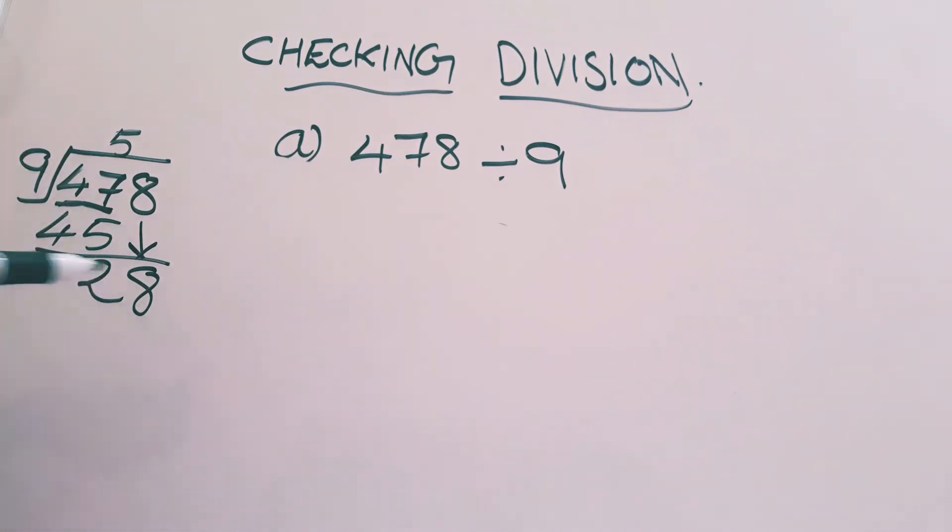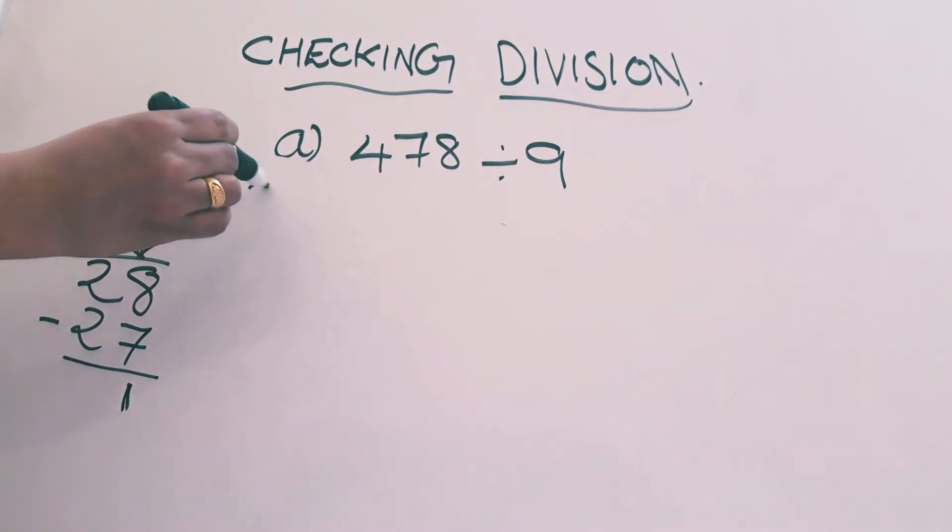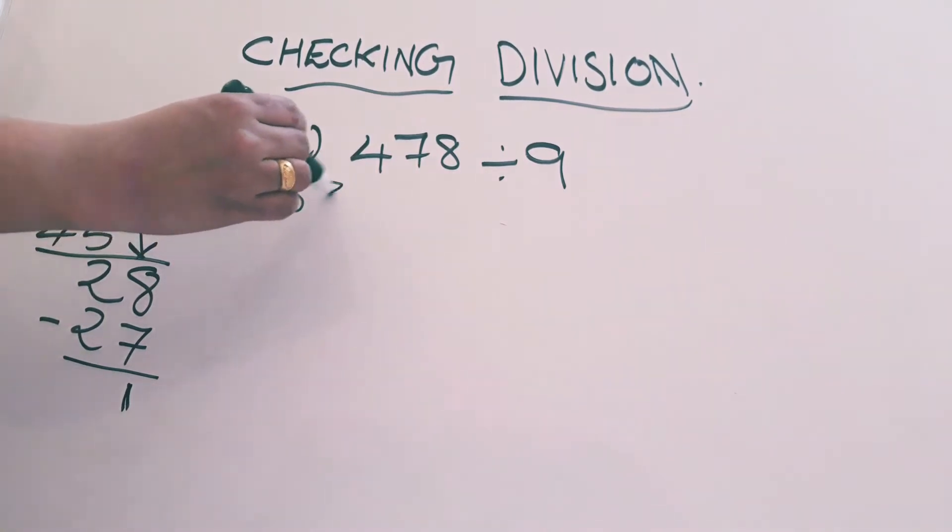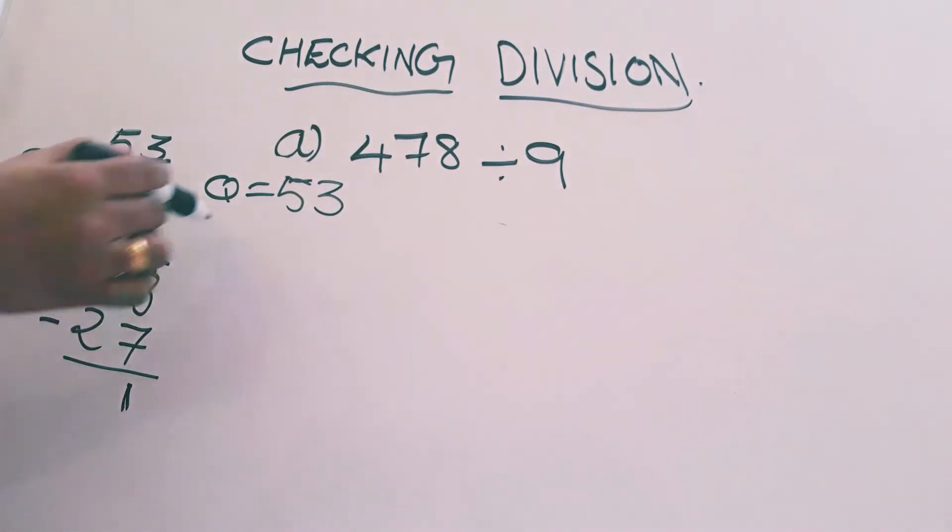In 9th table, 28 is not there, but 27 is there. 9 threes are 27. Underline. 8 minus 7 is 1. We got quotient is equal to 53, remainder is equal to 1.